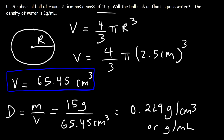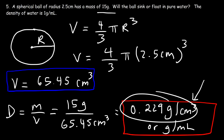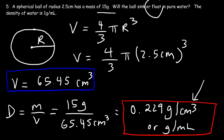Keep in mind, a cubic centimeter and one milliliter are about the same. Now that you have the density of the sphere, if you place it in water, will it sink or float? Heavy objects sink and light objects float — it's based on density. If an object has a density greater than 1, it's going to sink because water can't support its weight. But for objects with a density less than 1, it's going to float. Because the density of this sphere is less than 1 — less than the density of water — the sphere is going to float in pure water.